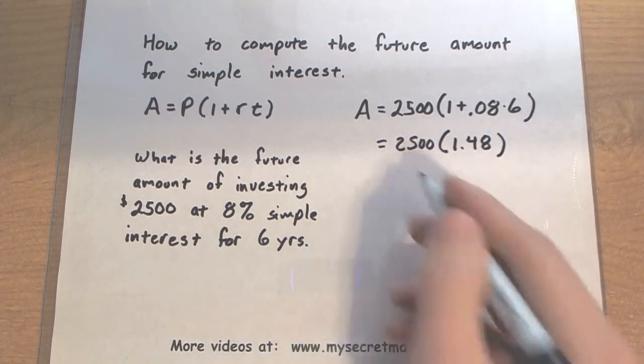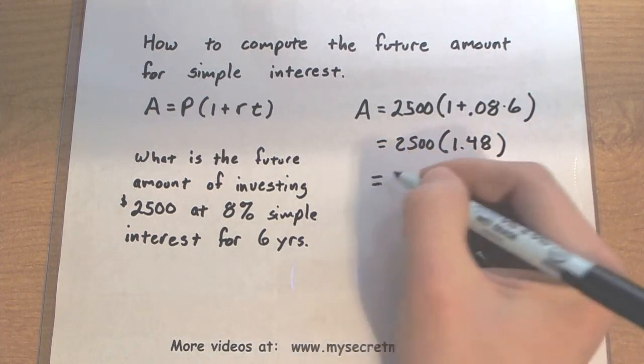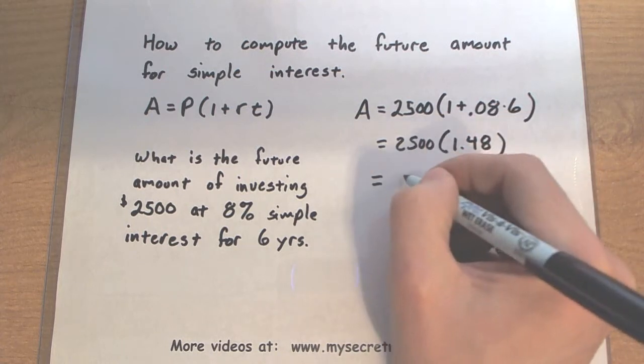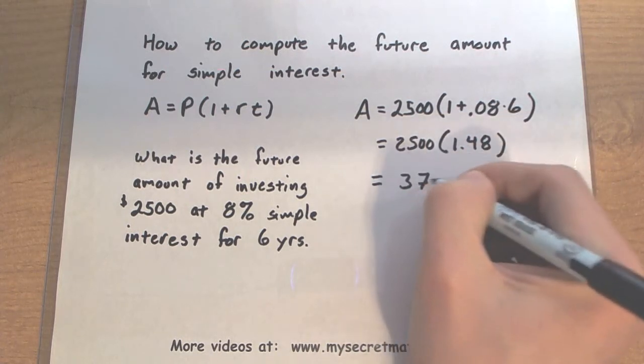All right, then multiply those two together. This says that the future amount is $3,700.